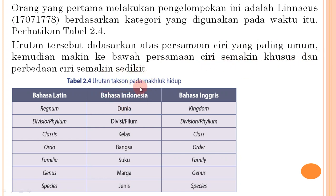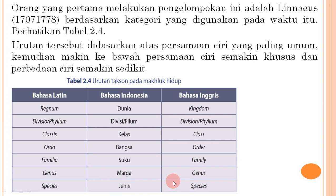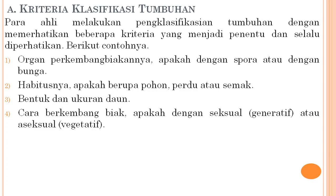Orang yang pertama melakukan pengelompokan ini adalah Linnaeus. Urutan takson pada makhluk hidup dalam bahasa Indonesia, Latin, dan Inggris adalah: Kingdom/Regnum (dunia), Divisio/Filum, Klasis (kelas), Ordo (bangsa/order), Familia (suku/famili), Genus (marga), Spesies (jenis). Makin ke bawah persamaan ciri semakin khusus dan perbedaan ciri semakin sedikit.